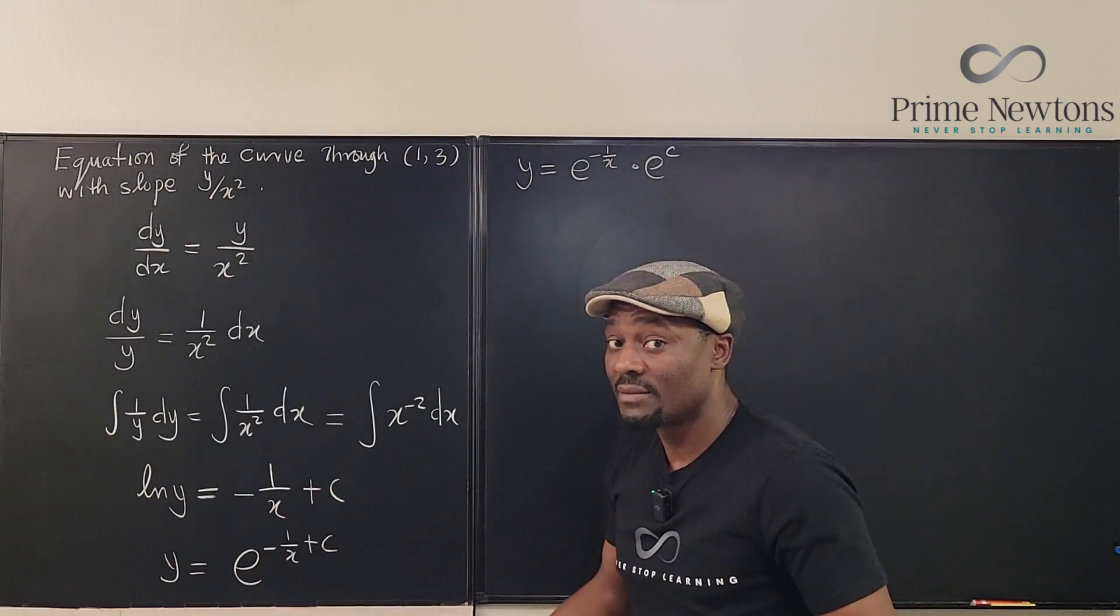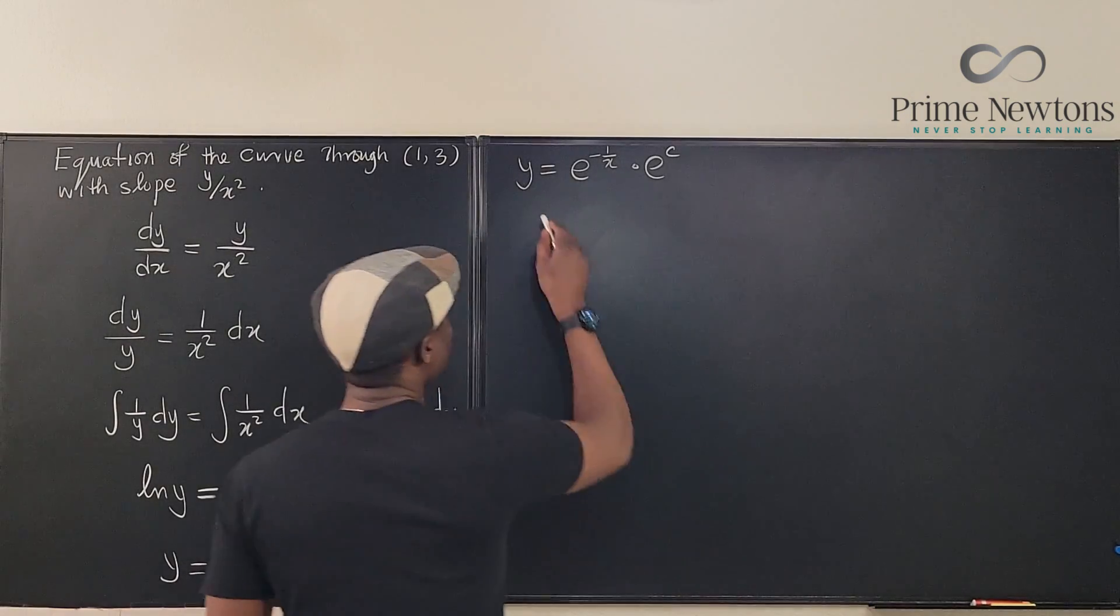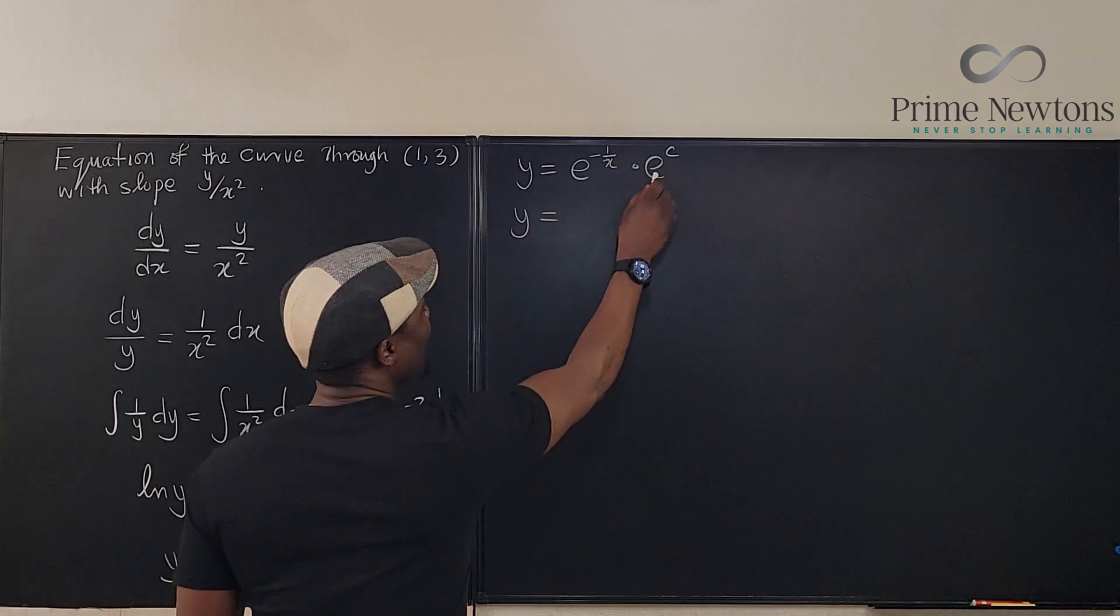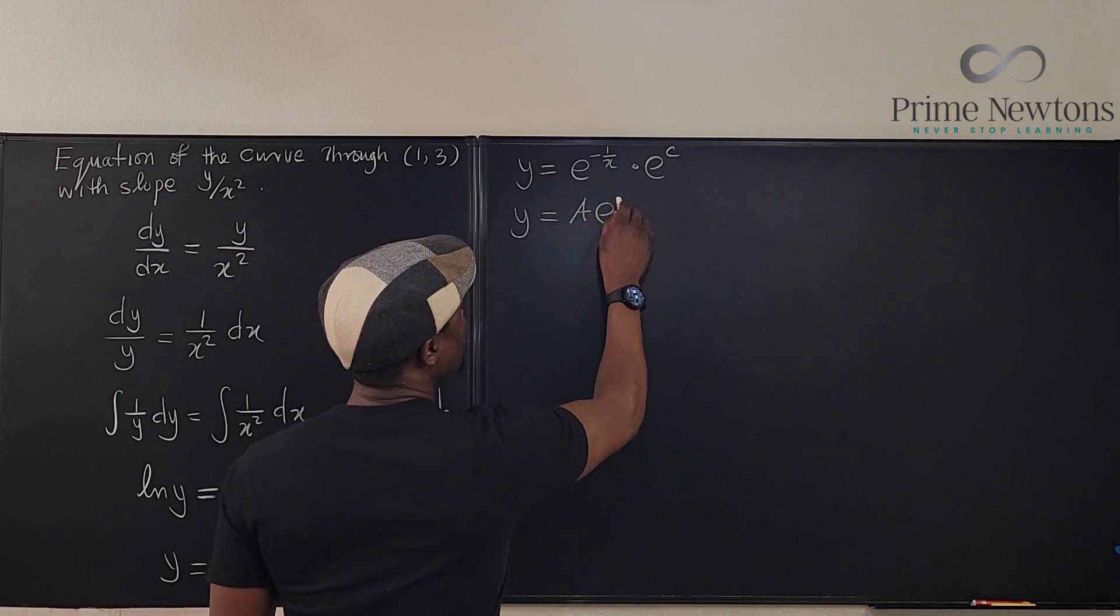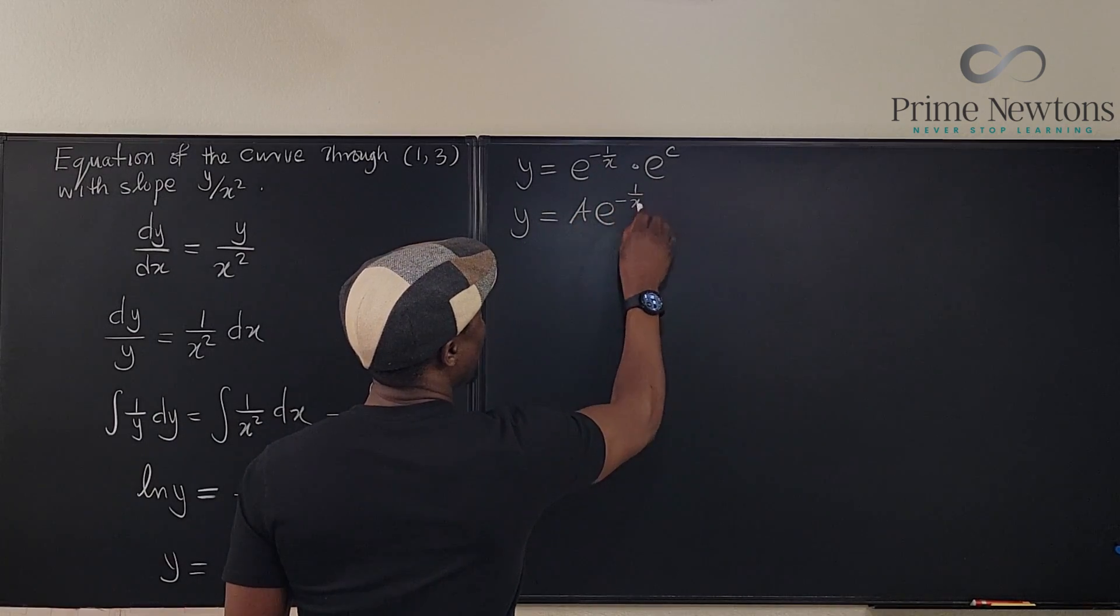We can just call it a, whatever you like. I like a. So y will be equal to a times e to the negative 1 over x.